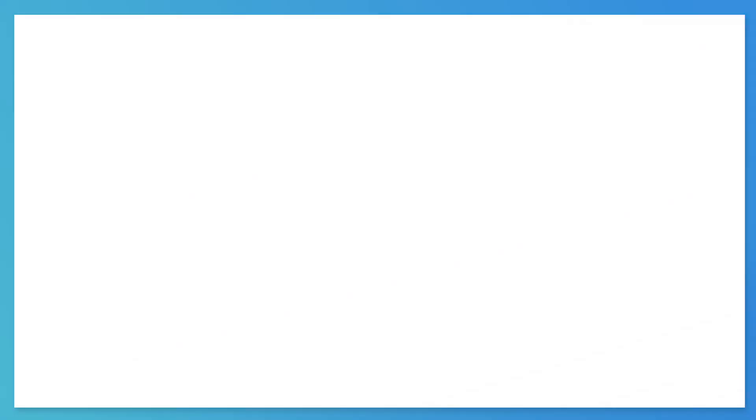Almost all AMP components are run by at least some JavaScript. For some AMP components, like the AMP image tag, the JavaScript is built directly into the AMP runtime script, which you included at the top of your page in the boilerplate. But for most AMP components, you'll need to include a separate script tag. You only include the scripts you actually use in your site. This way, users will only have to download the code necessary to browse your page — less code means your site will load much faster.